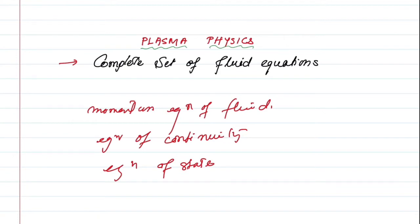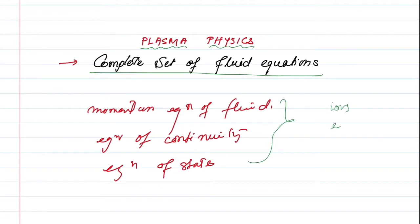When we say complete set of fluid equations, it includes these three equations. We know that plasma fluid consists of two types — actually not only two types, it contains ions, electrons, and also neutral particles. But here for simplicity we will consider only ions and electrons.